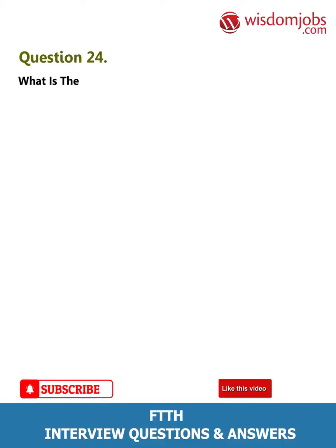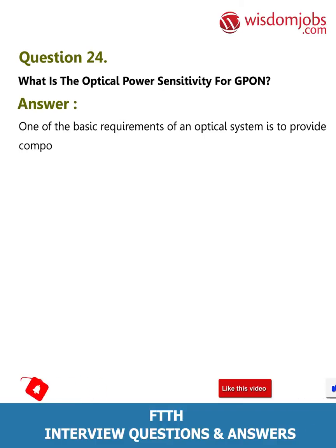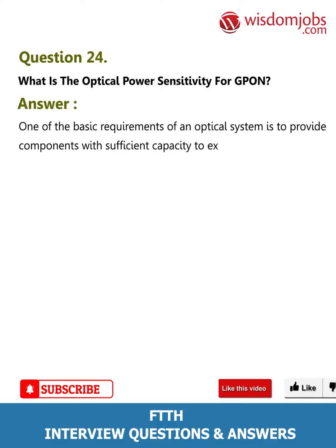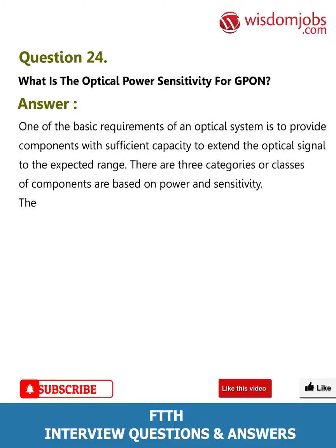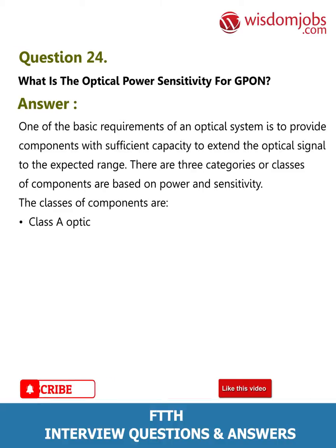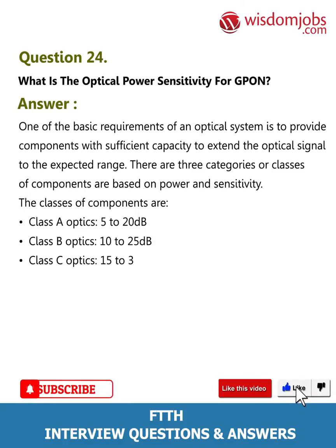Question 24: What is the optical power sensitivity for GPON? Answer: One of the basic requirements of an optical system is to provide components with sufficient capacity to extend the optical signal to the expected range. There are three classes of components based on power and sensitivity: Class A optics — 5 to 20 dB; Class B optics — 10 to 25 dB; Class C optics — 15 to 30 dB.